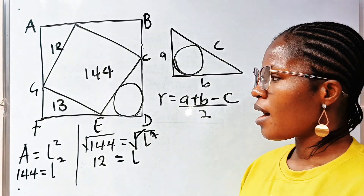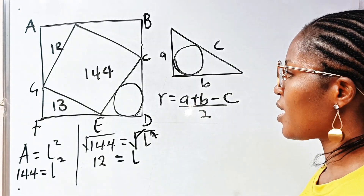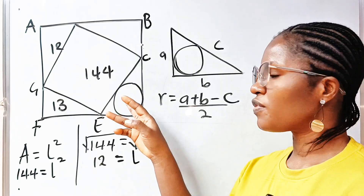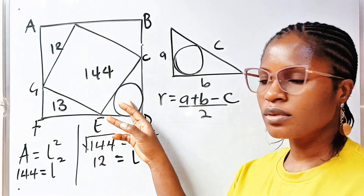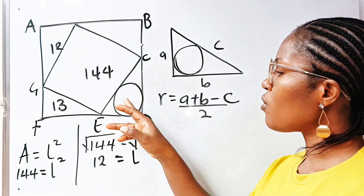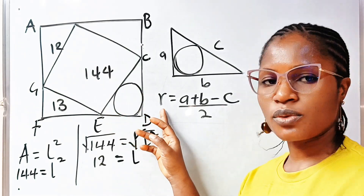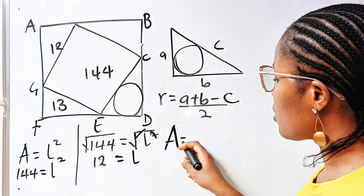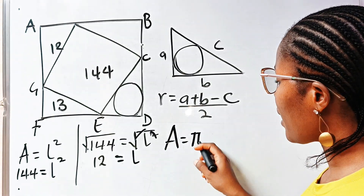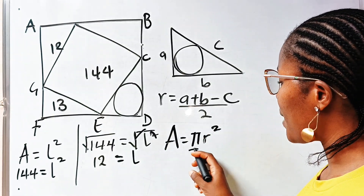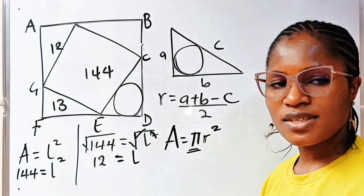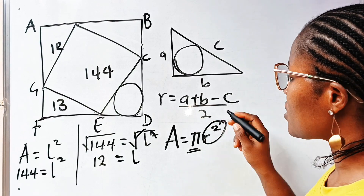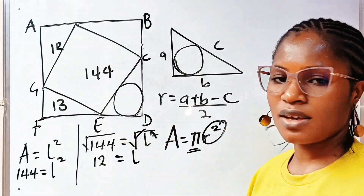We are asked to find the area of this circle, and we cannot find the area of the circle without the radius. Because the area of a circle is pi R squared, and pi is a constant. So, we only need to get the radius in order to find the area.